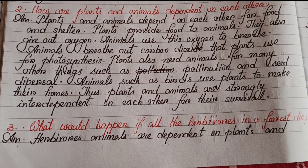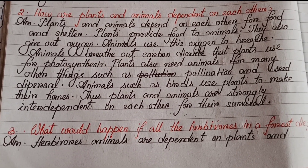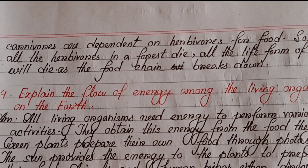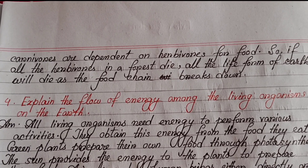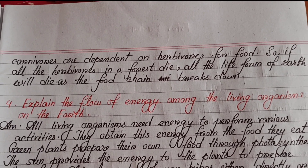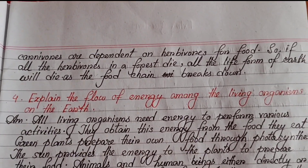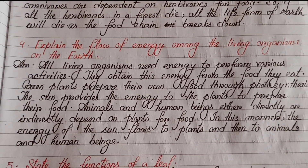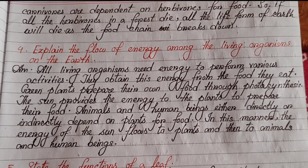Number three: What would happen if all the herbivores in a forest die? Herbivore animals are dependent on plants, and carnivores are dependent on herbivores for food. So if all the herbivores in a forest die, all life forms on earth will die as the food chain breaks down.